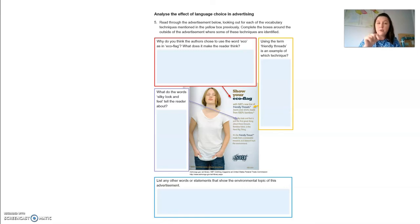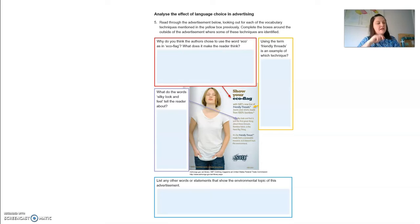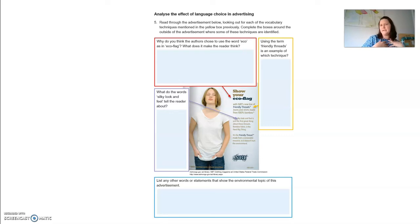The word 'eco' makes the reader think that it's environmentally friendly — eco is short for environment or environmental. I would say something along the lines of: it makes the reader think it is an environmentally friendly product. Now, using the term 'friendly threads' — threads are your clothing, a bunch of threads woven together. Can they be friendly? Is that a human characteristic or ability? Yes — that's an example of personification.